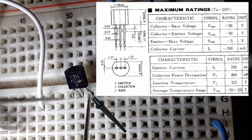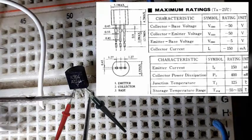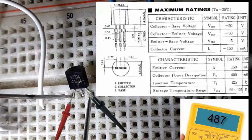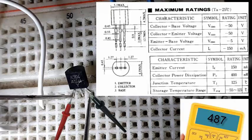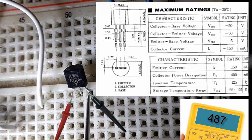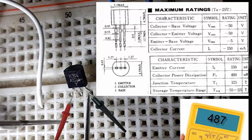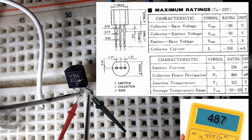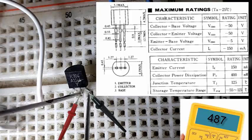E a ponta vermelha vamos colocar no pino 1, que é no emissor. E o multímetro vai marcar em torno de 487. Tirando a ponta vermelha do emissor e colocando aqui no coletor, nós teremos 485 marcando aí no multímetro também, na escala de continuidade.